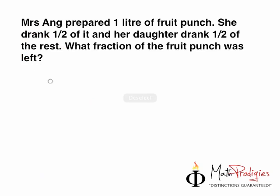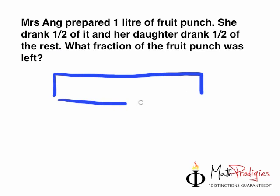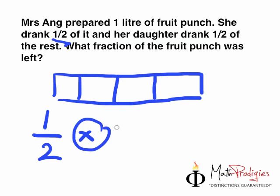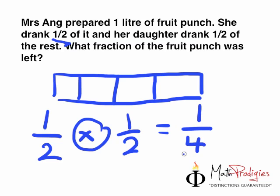One more time, okay? Let's not colour it this time. So she divided it into half, remember? She drank half of this, and her daughter drank half of the rest. So whatever you do on one side, you must also do on the other side. So you have 4 parts. To make it more clear for you, you must take a look at this half — half. When someone says her daughter drank half of the rest, that means it's half times half. Half times half equals? 1 times 1 equals 1, 2 times 2 equals 4. And hence, you get the answer.